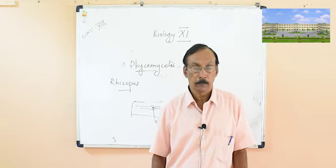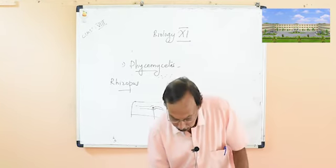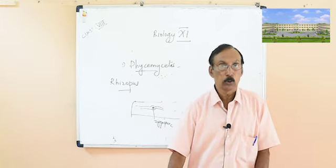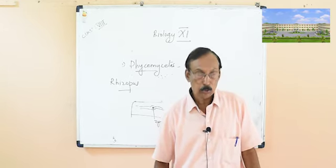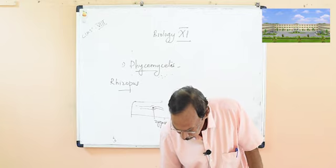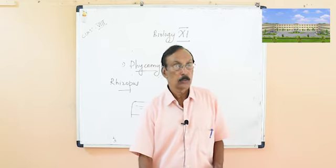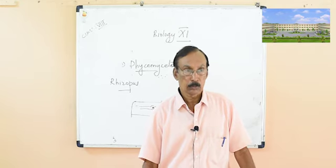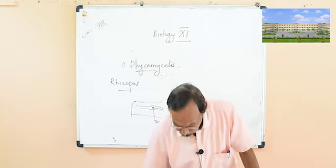After the formation of the zygote, meiosis takes place again. Another example in this group is Albugo, a parasitic fungus that causes diseases in mustard plants. Many fungi can be parasitic and cause diseases in both plants and animals.